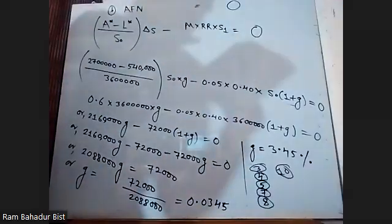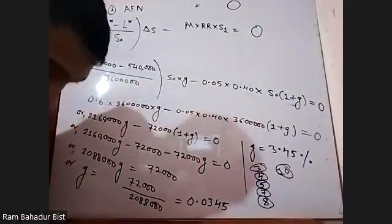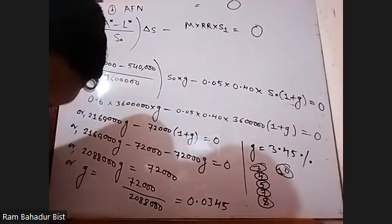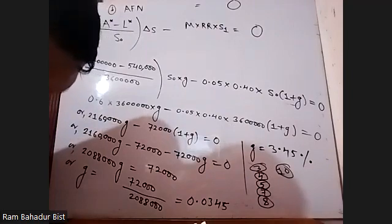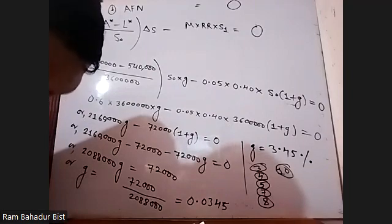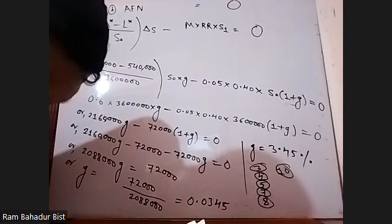A company presently capitalized with five lakh rupees consists of five thousand shares of common stock at rupees one hundred each. Additional finance of rupees five lakh is required for the expansion program. The following possible financing plans are being considered.